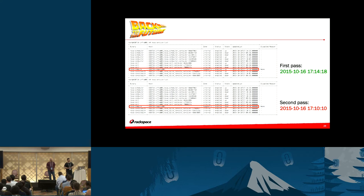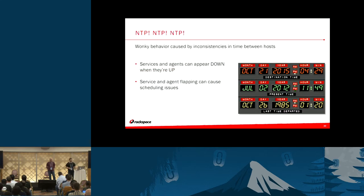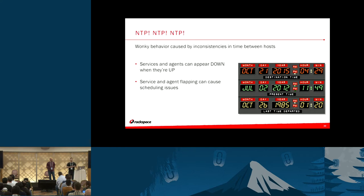But when we do a 'nova service-list' to get the actual service status, we can see it's down, and we also notice a big difference in time. When agents check in, the database is updated with the time of that check-in. Other services such as the scheduler use that time to determine if the service is available. The scheduler determines the availability of a host by comparing the difference between its local time and the last-seen time of the compute node — by default that threshold is 60 seconds, and if it exceeds that, the service is marked as down.